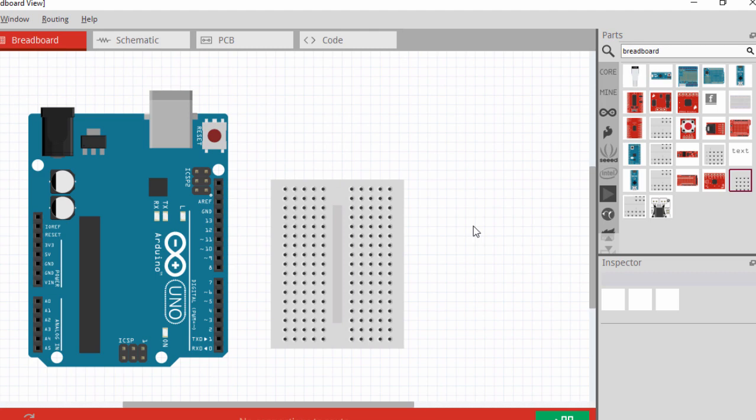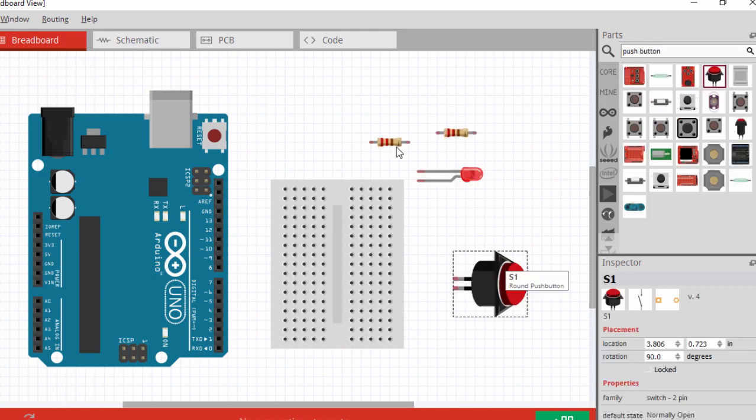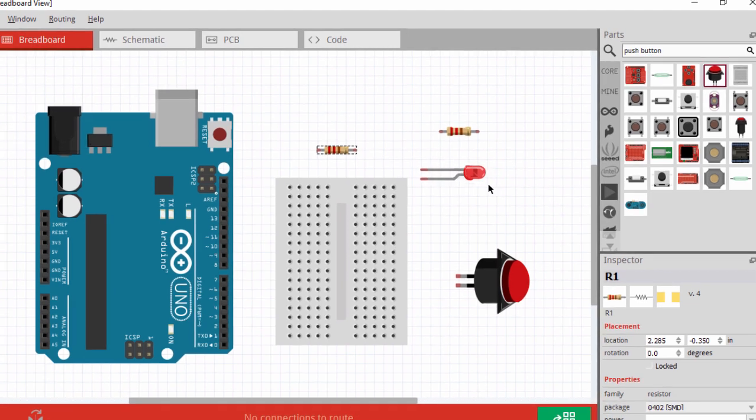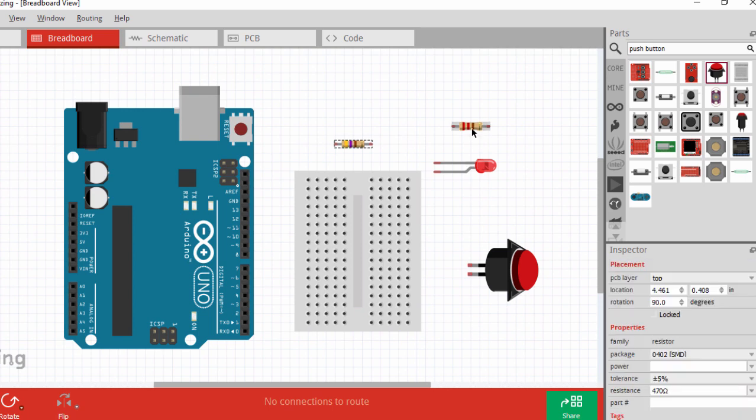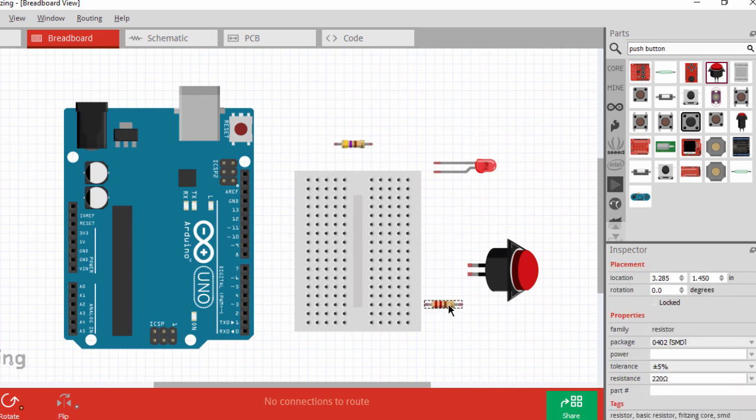We're going to use the mini breadboard. Then we're going to need two resistors, one push button and one LED. The first resistor is going to be a 470 ohms resistor. It's going to be a current limiting resistor for our LED. So the value is going to be 470. And the second one is going to be our pull-up resistor. The value is going to be 10K.